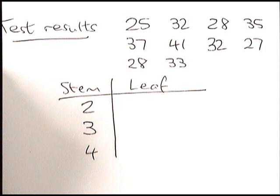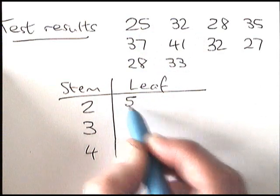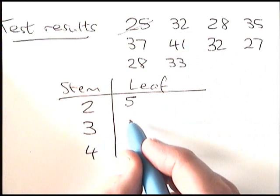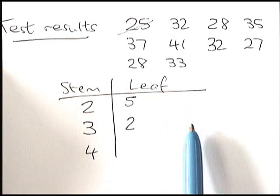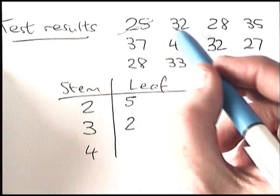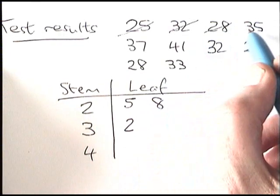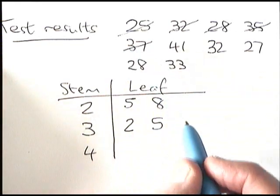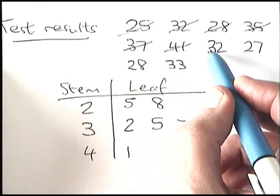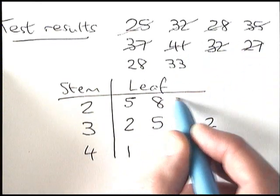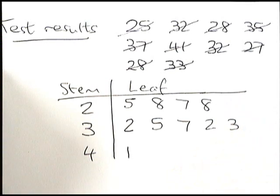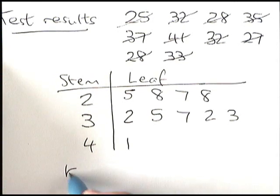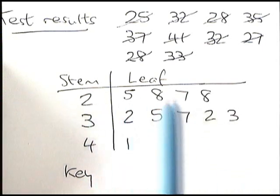Now I'll put the leaves on. 25 is 2 and 5; 32 is 3 and 2. It's very important when doing these by hand that you line the numbers up — they must be aligned in columns. Continuing: 28 is 2 and 8; 35 is 3 and 5; 37 is 3 and 7; 41 is 4 and 1; 32 is 3 and 2; 27 is 2 and 7; 28 is 2 and 8; 33 is 3 and 3. That is my nearly completed stem and leaf diagram.